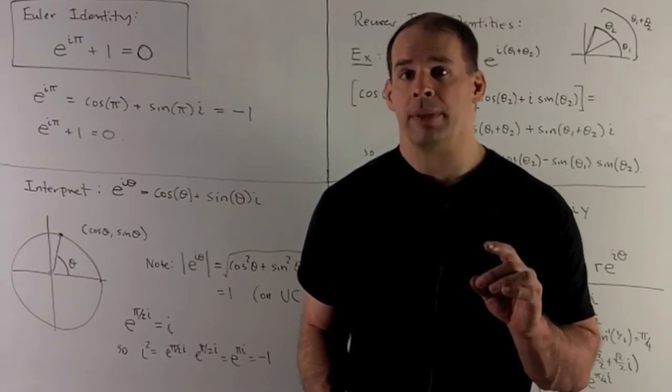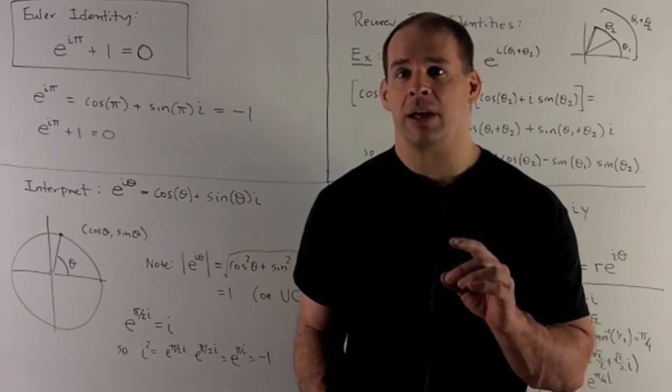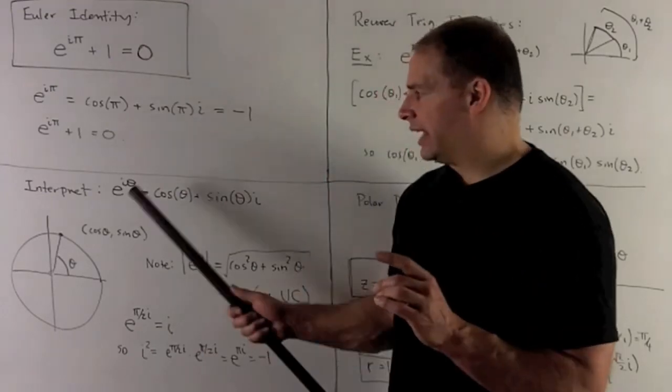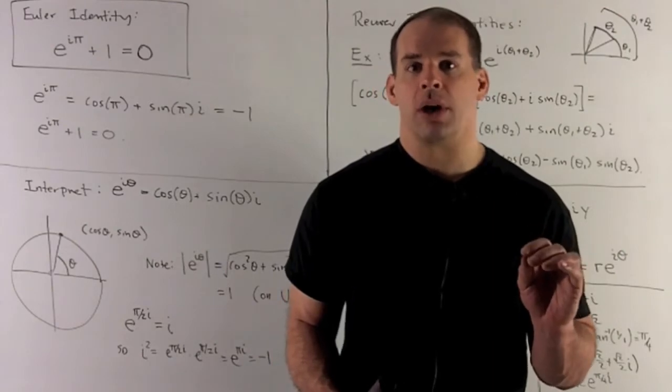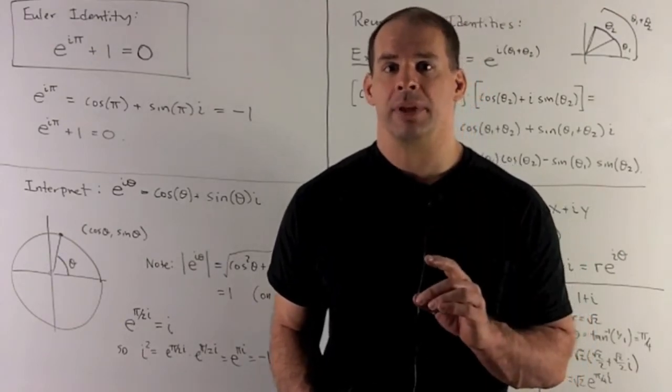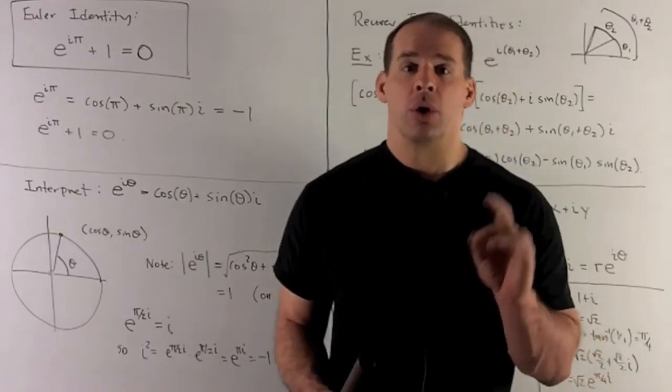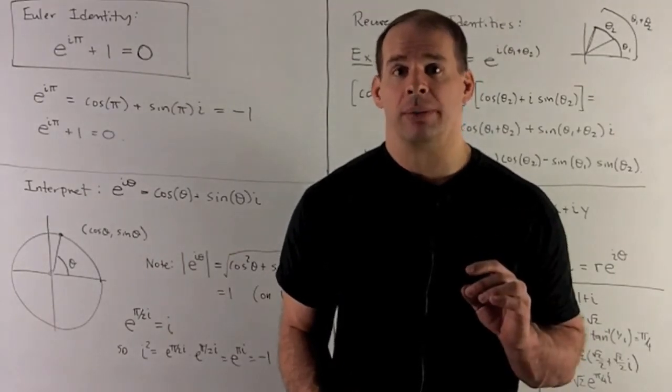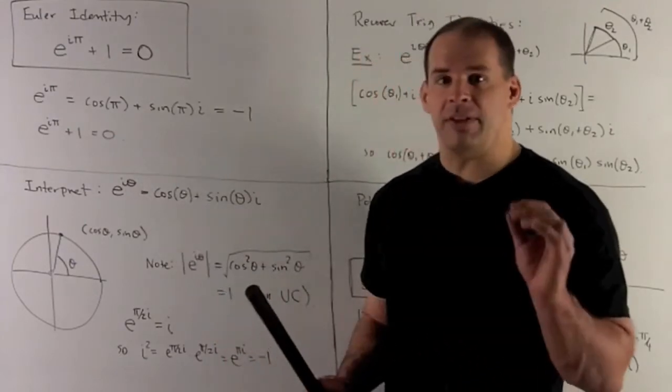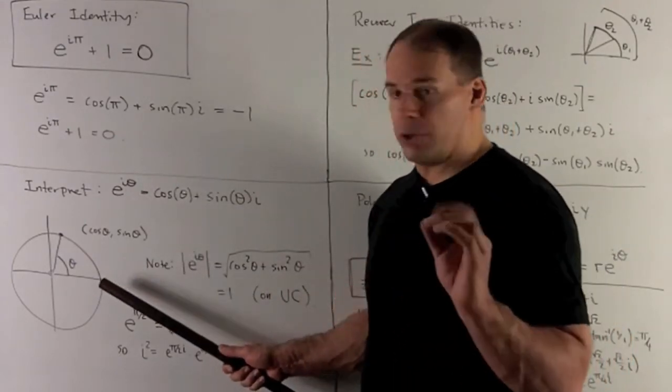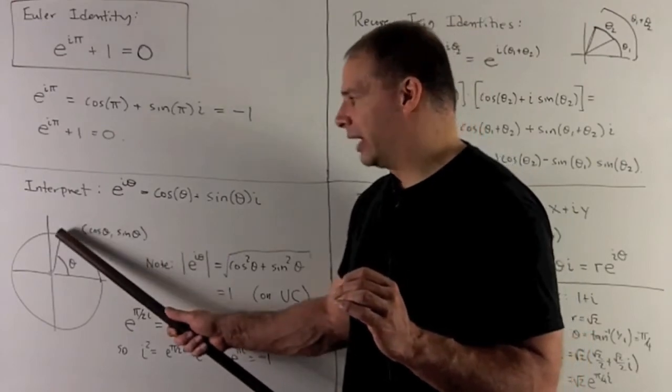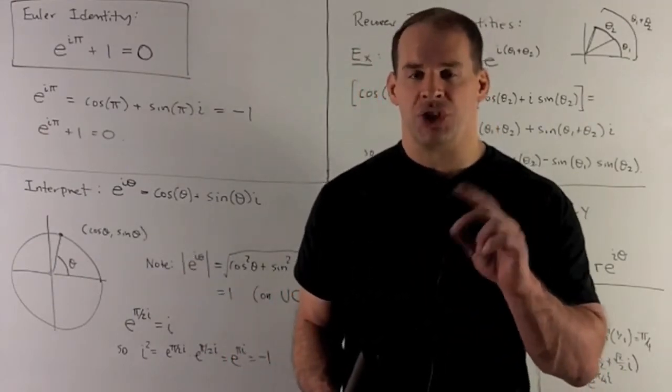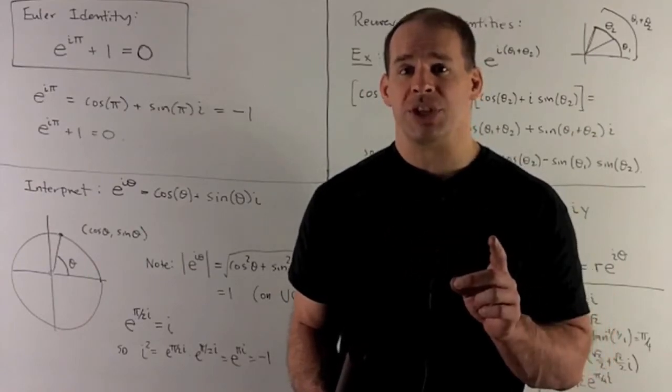Back to Euler's formula, we want to see what E to the I theta equal to cosine theta plus sine theta means in terms of geometry. So note, if I take E to the I theta, put it back into rectangular coordinates, we're going to have the point cosine theta, sine theta. Now that should ring some bells. If you notice, cosine theta is the X value on the unit circle, sine theta is the Y value in the unit circle. So this is telling us exactly that E to the I theta is going to be given by, you start at 0 on the unit circle, and then just move by theta. That'll take you to cosine theta, sine theta. So that's how we interpret E to the I theta. It's just our point in the unit circle going clockwise from 0 to theta.